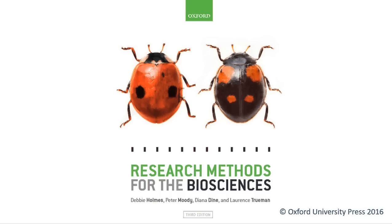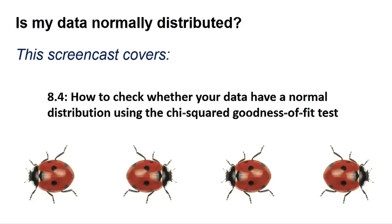Hello, welcome to another Research Methods for the Biosciences screencast for Microsoft Excel. This screencast gives you some advice on judging if your data is normally distributed and includes section 8.4, how to check whether your data have a normal distribution using the chi-squared goodness-of-fit test.